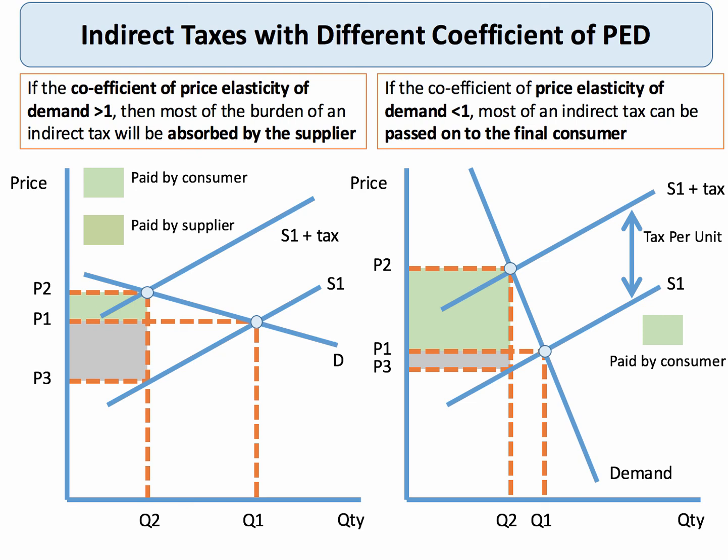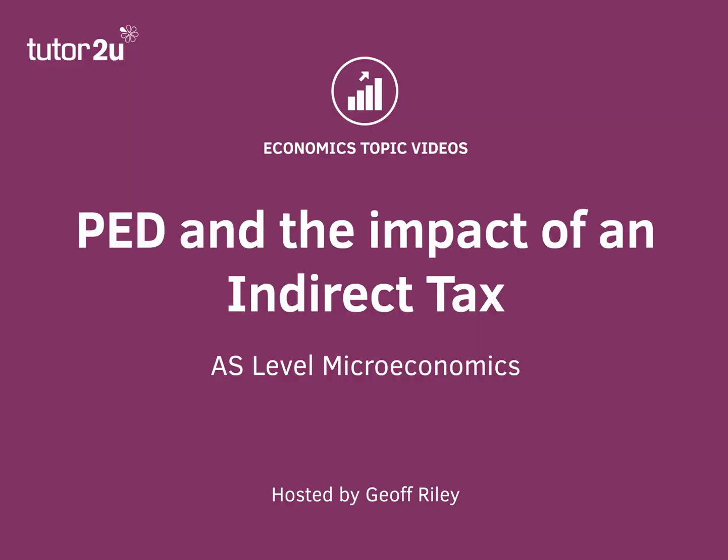The consumer pays the increase in price, and the total tax revenue is shown by the two shaded areas together. When demand is inelastic the government tends to get more tax revenue, but it takes a big price rise to have a fairly modest effect on quantity. The key point is that if the coefficient of elasticity is less than one, most of an indirect tax is paid for by the consumer.